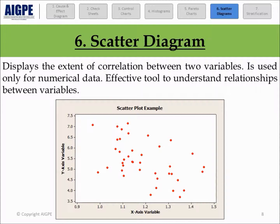Scatter diagrams help us understand the extent of the relationship between two variables and are used for continuous data only. They require data collation for both x and y variables and provide an easy-to-understand graphical representation. Data can be positively or negatively correlated, or no correlation may exist.